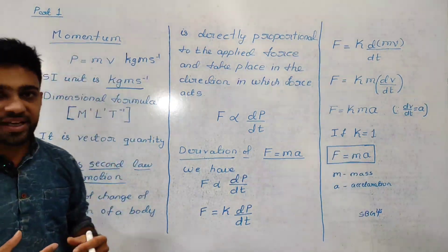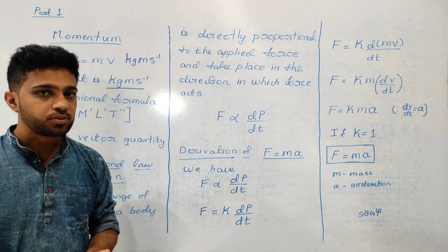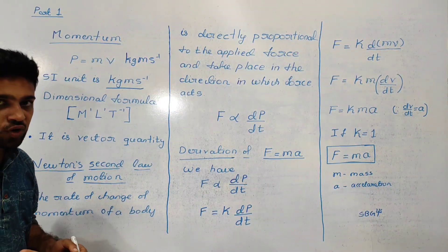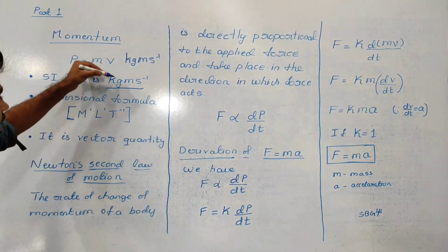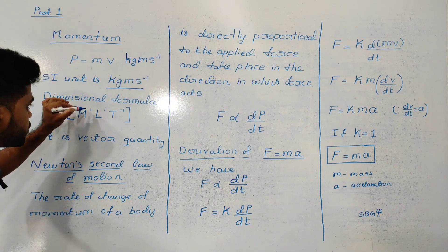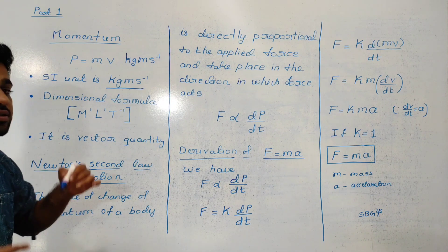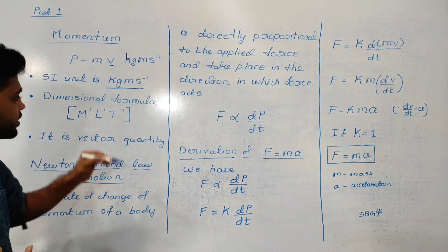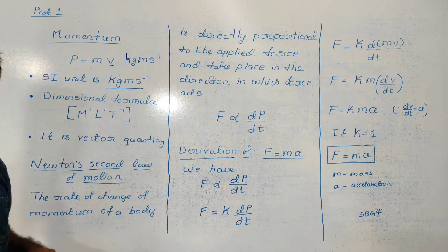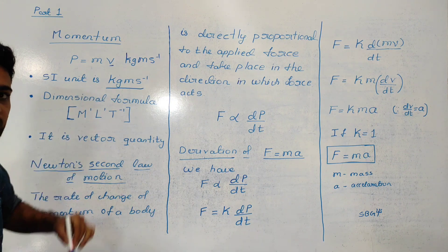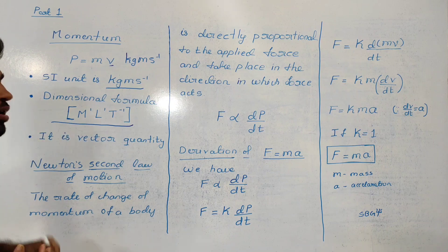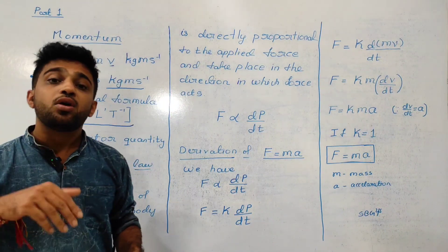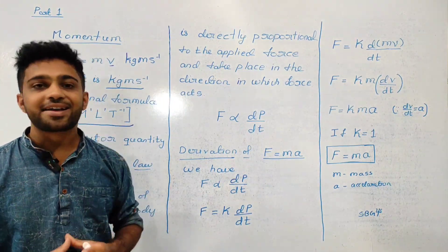The dimensional formula of momentum: M, L, T. Kg is M raised to 1. Velocity dimensional formula is L T raised to minus 1. So momentum dimensional formula is M raised to 1, L raised to 1, T raised to minus 1. Momentum is a vector quantity.